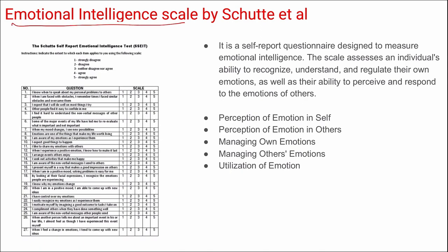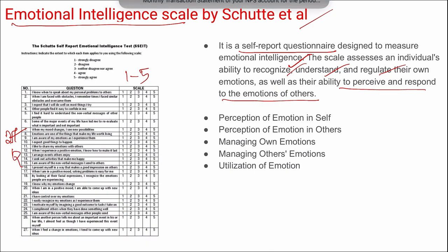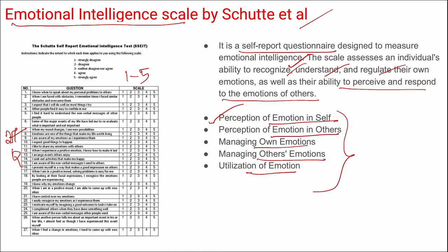Next is the Emotional Intelligence Scale proposed by Shkatt et al. It is a self-reported questionnaire designed to measure emotional intelligence, assessing an individual's ability to recognize, understand, and regulate their own emotions as well as perceive and respond to emotions of others. It has 27 items on a 1 to 5 Likert scale grouped under five domains: perception of emotion in self, perception of emotion in others, managing own emotions, managing others' emotions, and utilization of emotion.